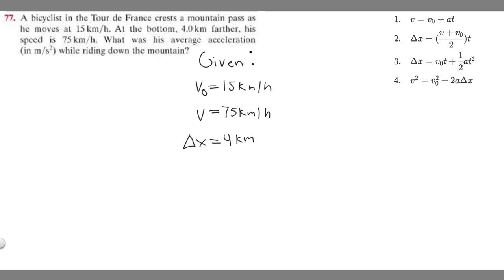And then what is it asking us for? It's asking for the average acceleration in meters per second squared. So we're going to write a equals question mark because we're trying to solve for it in meters per second squared. So now we've got all of our givens.